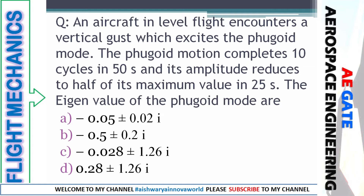Next question: an aircraft in level flight encounters a vertical gust which excites the phugoid mode. The phugoid motion completes 10 cycles in 50 seconds, and its amplitude is reduced to half of its maximum value in 25 seconds. Find the eigenvalue of the phugoid mode. Let's move to the solution.